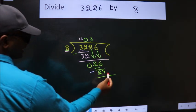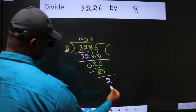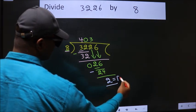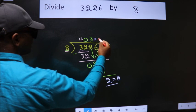No more numbers to bring it down. So we stop here. This is our remainder. This is our quotient.